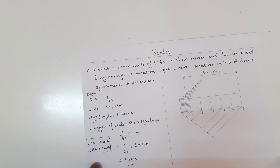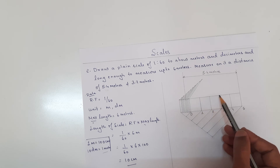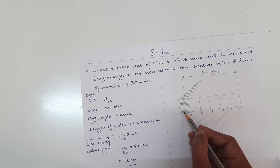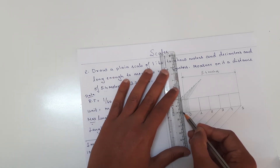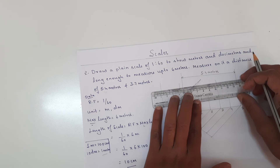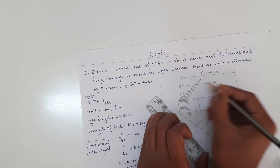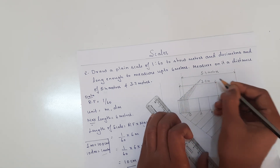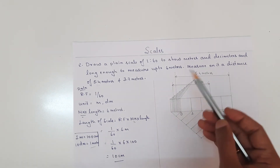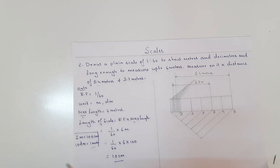In the same way, we have to represent 3.7 meters. First I measure 3 meters from 0 to 1, 2, 3. Then I need to represent 7 decimeters: 1, 2, 3, 4, 5, 6, 7. This is how we represent 3.7 meters. This is how we can construct a meter scale that can measure a maximum of 6 meters.